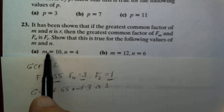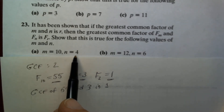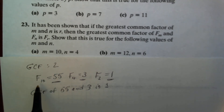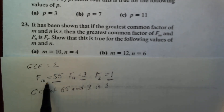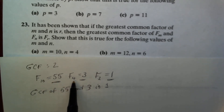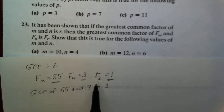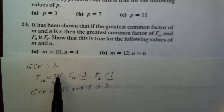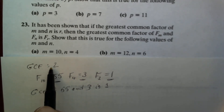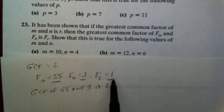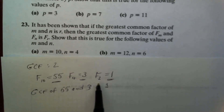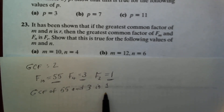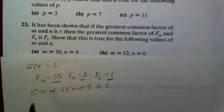Looking at m equals 10 and n equals 4: the GCF is 2. F sub m is F sub 10, the tenth Fibonacci number is 55. F sub 4, the fourth Fibonacci number, is 3. The value of r is 2, and F sub 2 equals 1. Sure enough, the GCF of 55 and 3 is 1. That was part A.